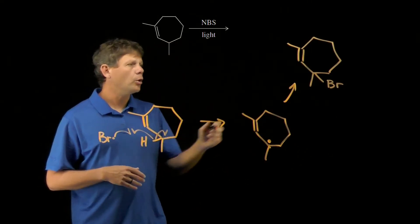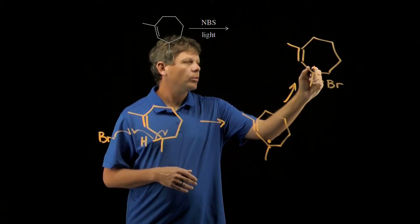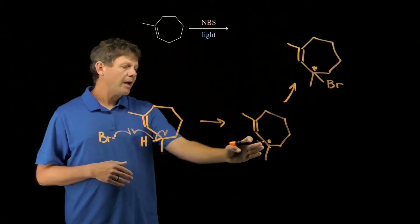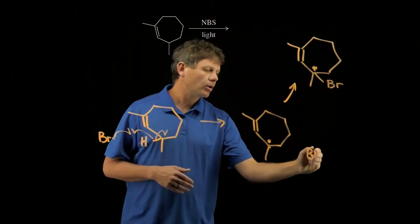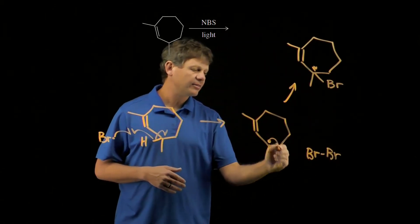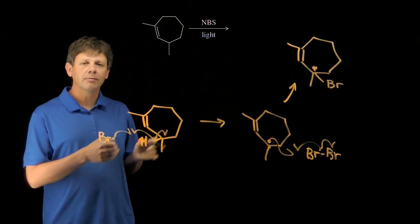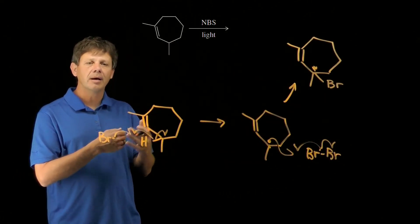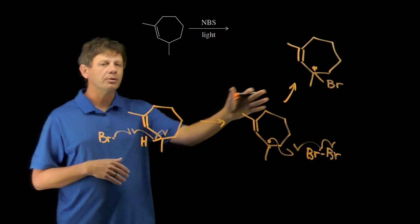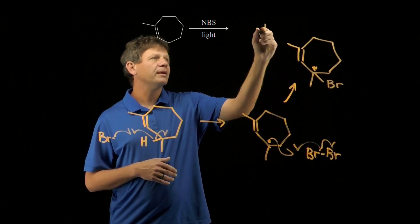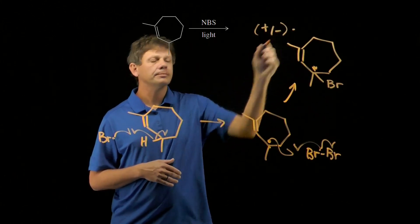Now, you'll note that in this process, we've created a new stereo center. When that radical attacked Br2 in the second step, the radical could be attacked from the front or the back, the top or the bottom. As a result, this will end up giving a racemic mixture.